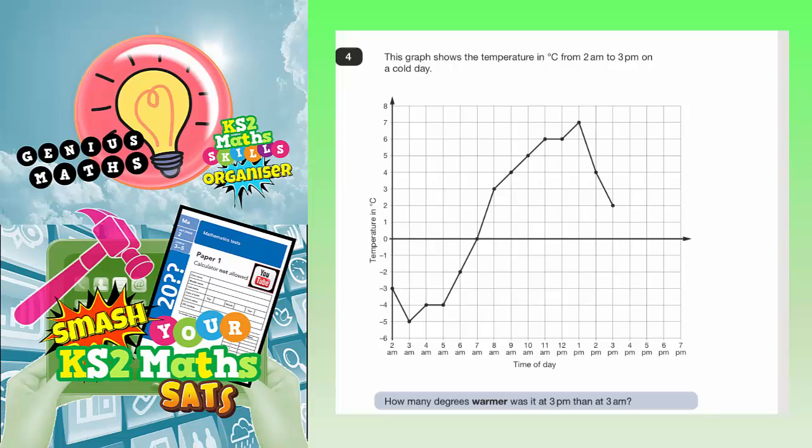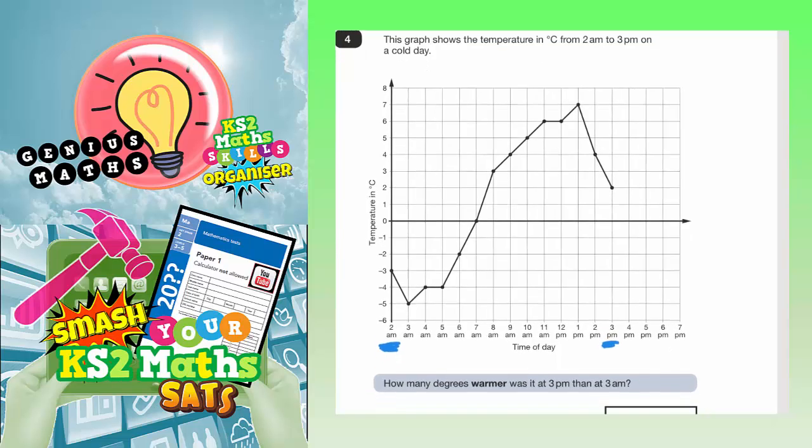Question 4. This graph shows the temperature in degrees C from 2am to 3pm on a cold day. 2am is here, 3pm is here. Let's have a look at what the questions are.